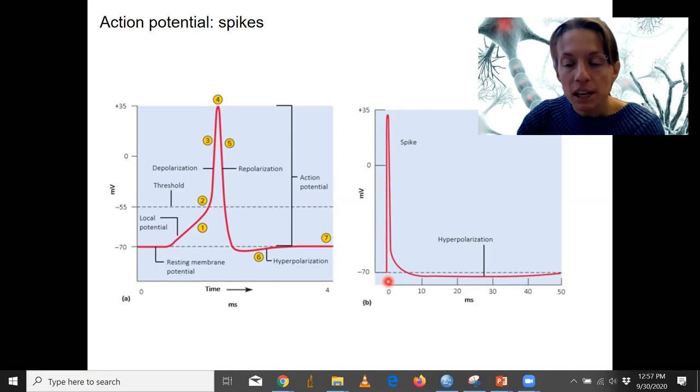So you'll see action potentials depicted as just spikes. And that's because it's all or nothing. You can just show it as a single point like that. This would not be how you draw the detail, though, for exam purposes.